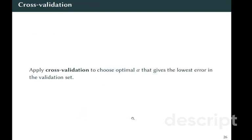And we deal with choosing what would be the optimal alpha through cross-validation, the same way as we did it through lasso and ridge. We choose which alpha gives us the lowest error in the validation set.